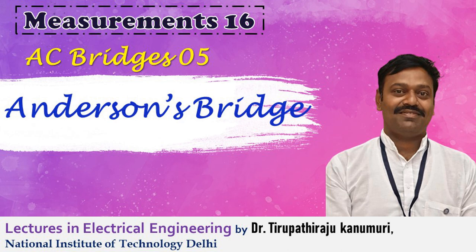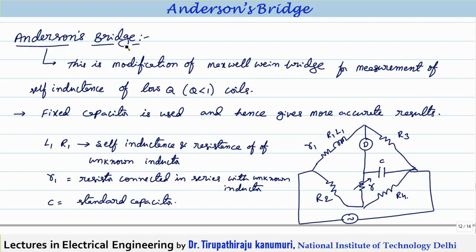Today we are going to discuss about Anderson bridge. This is a modification of Maxwell's Wien bridge for measurement of self-inductance of low Q coils, meaning the value of Q is less than 1. We will see the derivation, followed by the conclusion, and prove why it is only used for low Q coils.